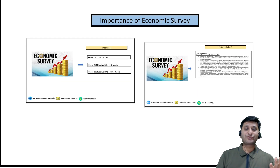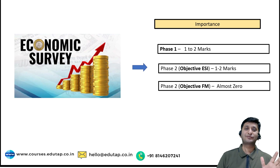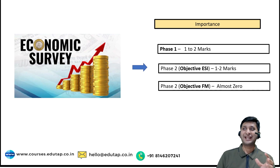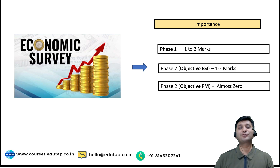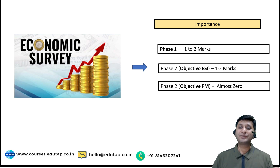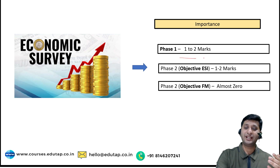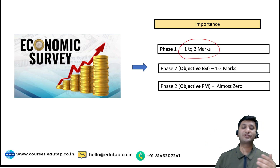So first of all, what is the importance of the Economic Survey? Prior to 2017, the Economic Survey had huge weightage — almost 15, or at least 10 marks worth of questions used to be directly from the Economic Survey. But over the last 3-4 years, in Phase 1 objective questions, hardly 1 or 2 questions come directly from the Economic Survey.